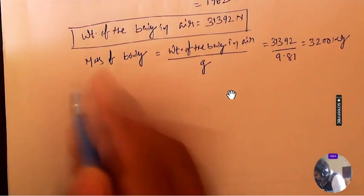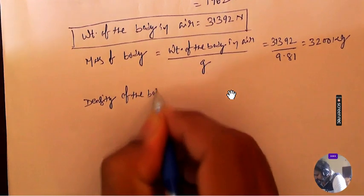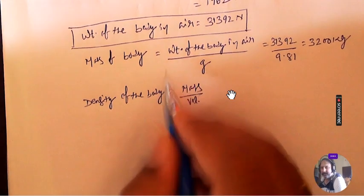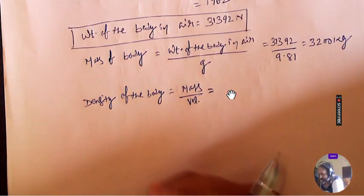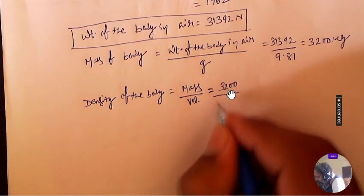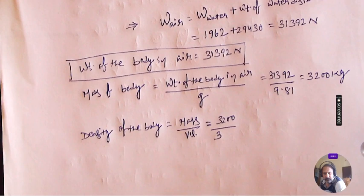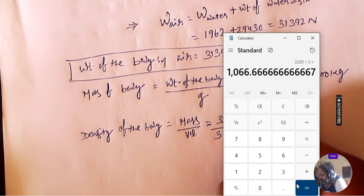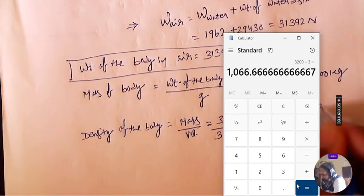Let us calculate the density. The reason we calculated mass is because density equals mass divided by volume. We are calculating density in order to calculate the specific gravity. So density = 3200 divided by 3, which gives approximately 1066.67 kg per meter cube. This is the density of the body.